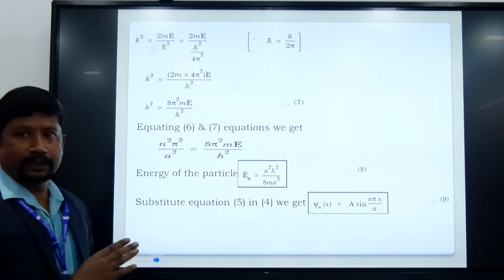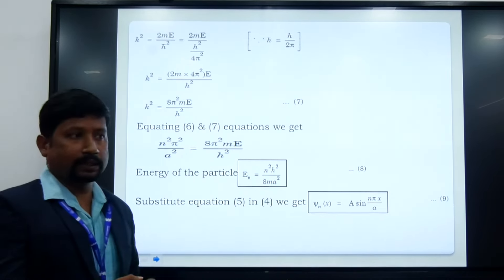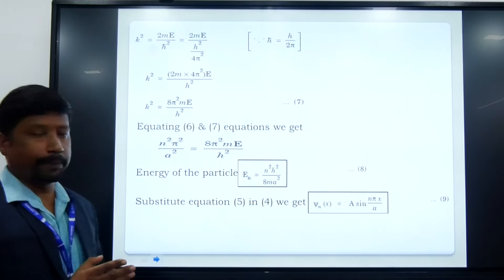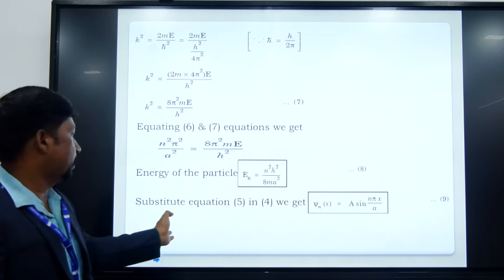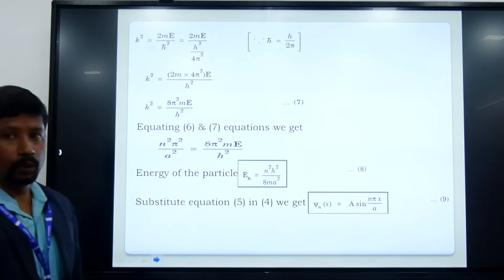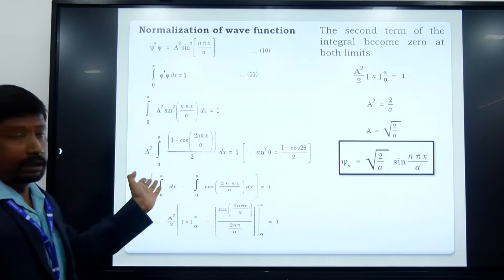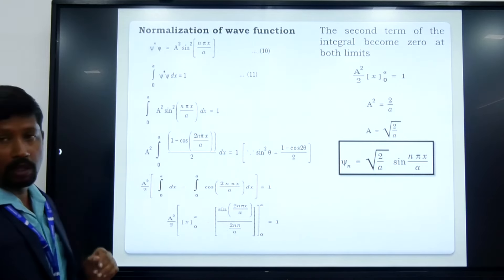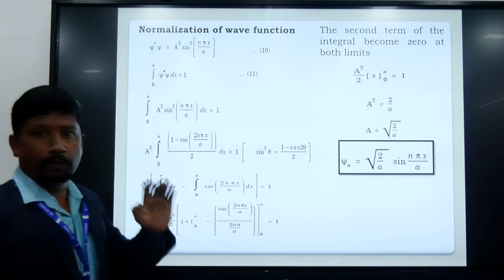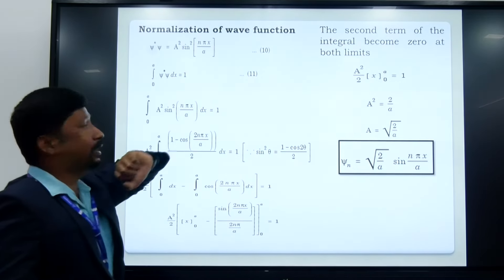From the general solution, ψ(x) equals A sin(kx) plus B cos(kx), and we know the particle does not exist in the B term. Substituting k equals nπ/A, we get the wave function ψn(x) is equal to A sin(nπx/A). We then find the value of the normalization constant A by normalizing this wave function. The probability density function is given by ψ* ψ equals A² sin²(nπx/A).